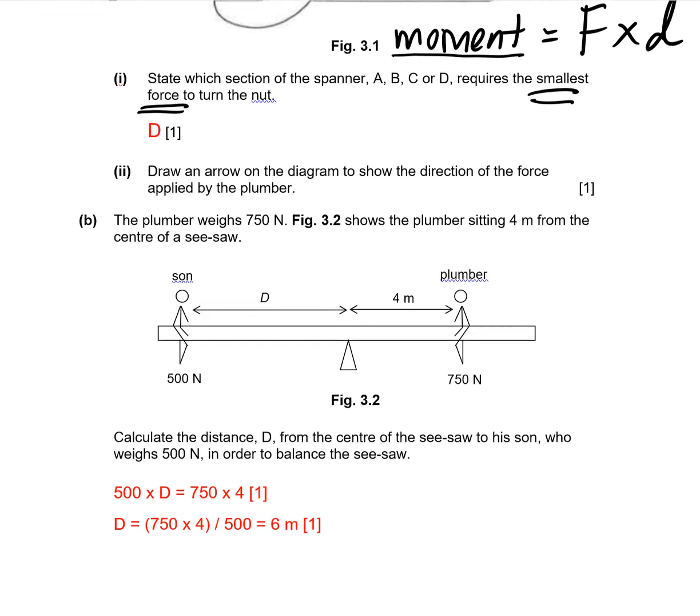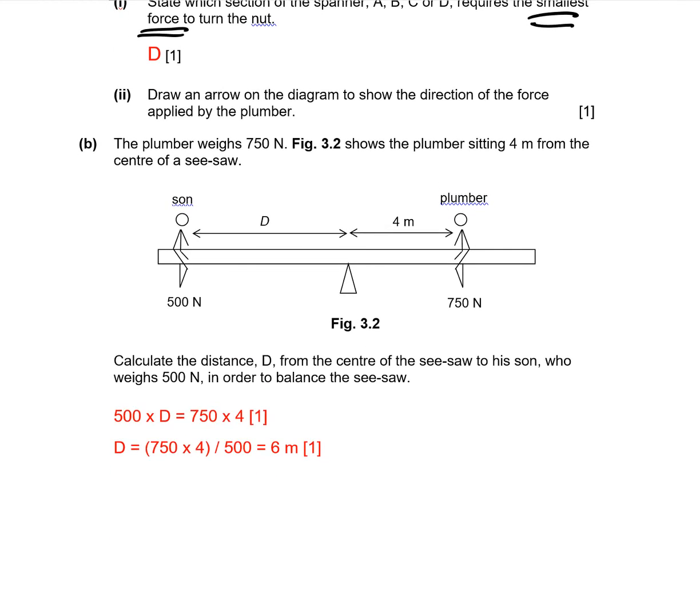And for part B, this is a question that says you want to balance the seesaw. There are two persons on the seesaw. So each of them will give a turning moment. The plumber will give a clockwise moment. The son will cause it to turn anti-clockwise.